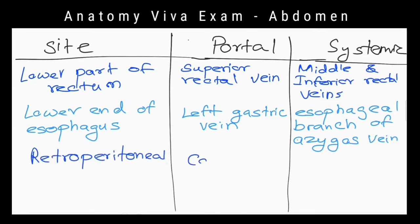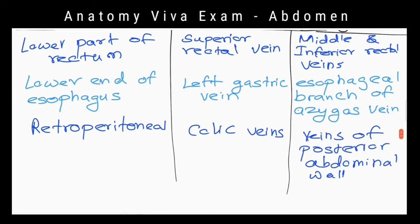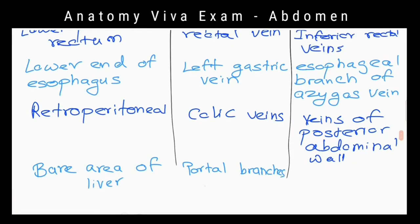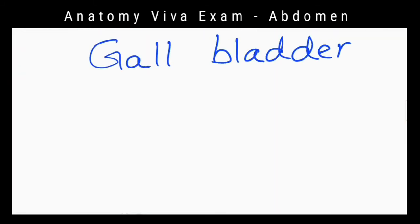Anastomosis between portal branches in the liver and veins of the diaphragm across the bare area of the liver. Anastomosis between portal tributaries in the mesentery and mesocolon and retroperitoneal veins.